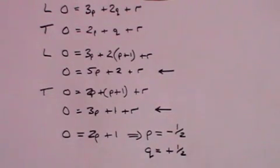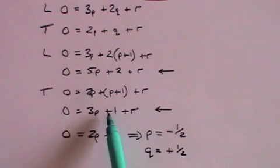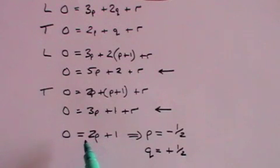And now we can substitute for example in here. We have 3P which is minus 3 halves plus 1 which is minus 1 half plus R equals 0. And that means that R must equal 1 half.